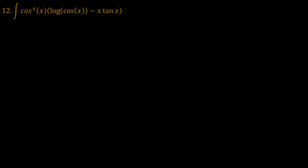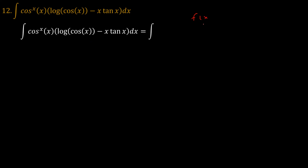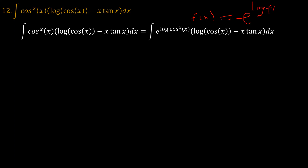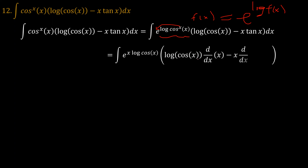Problem 12 is the integral of cosine to the power x of x times the natural logarithm of cosine x minus x·tan(x). One useful identity is that f(x) = e^(ln(f(x))). So if f(x) = cos^x(x), we express it as e^(x·ln(cos x)). Pushing x into the exponent, we have e^(x·ln(cos x)) times ln(cos x), and there is a hidden one here representing the derivative of x.